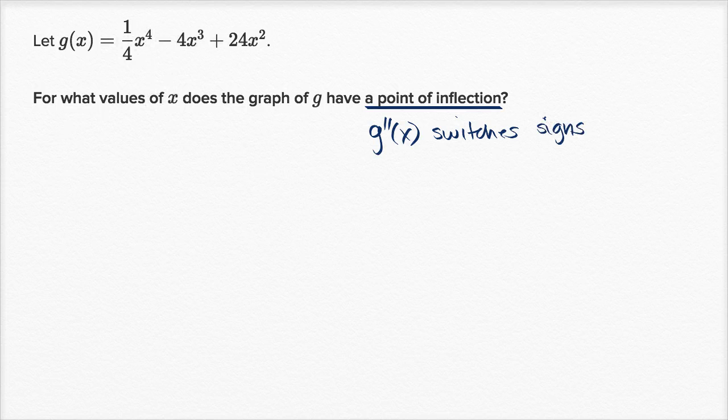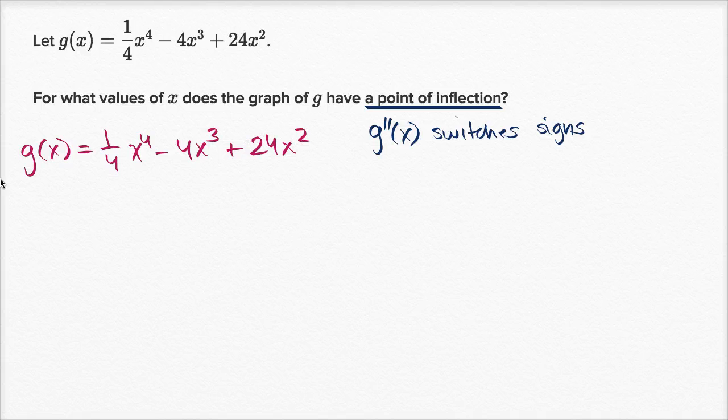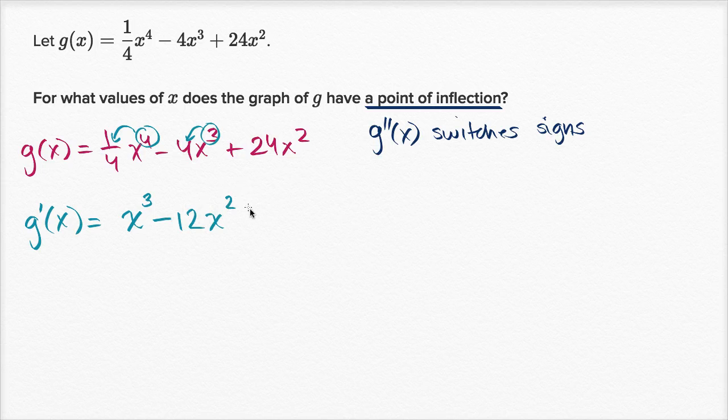So let's study our second derivative. In order to study our second derivative, let's find it. So we know that g of x is equal to one-fourth x to the fourth minus 4x to the third power plus 24x squared. So given that, let's now find g prime of x. G prime of x is going to be equal to, I'm just going to apply the power rule multiple times. Four times one-fourth is just one, I'm not going to write the one down. It's going to be x to the third power minus three times four is 12, x squared, plus two times 24, or 48x. So there you have it, I have our first derivative.